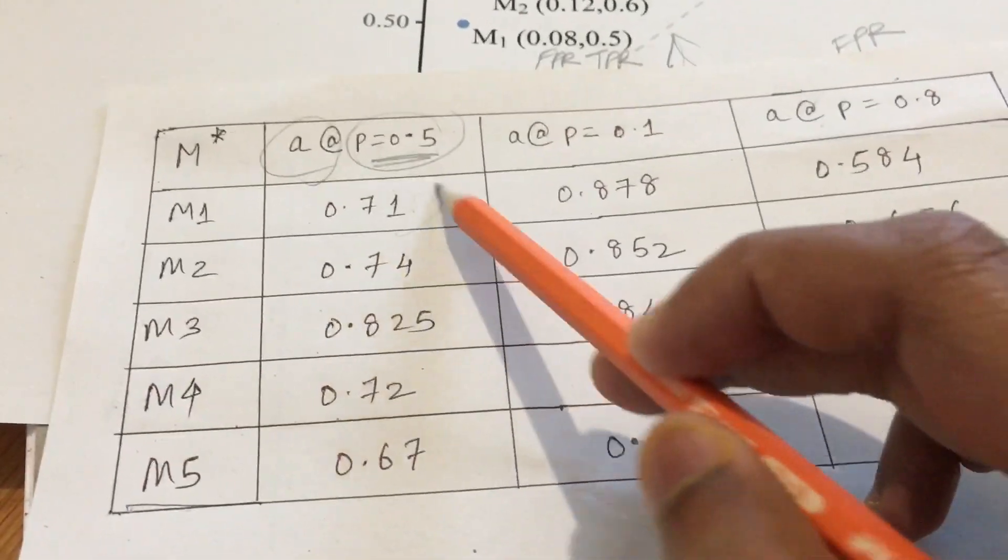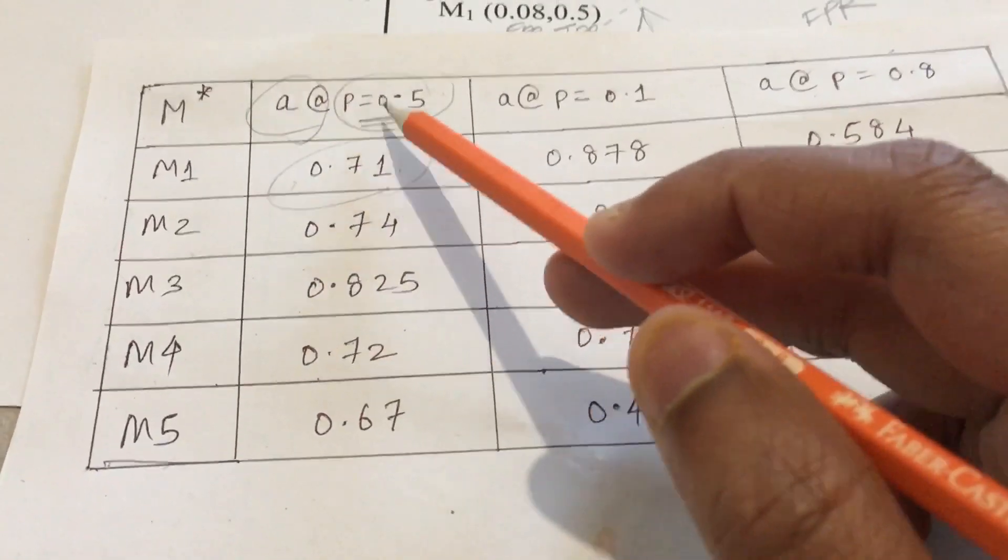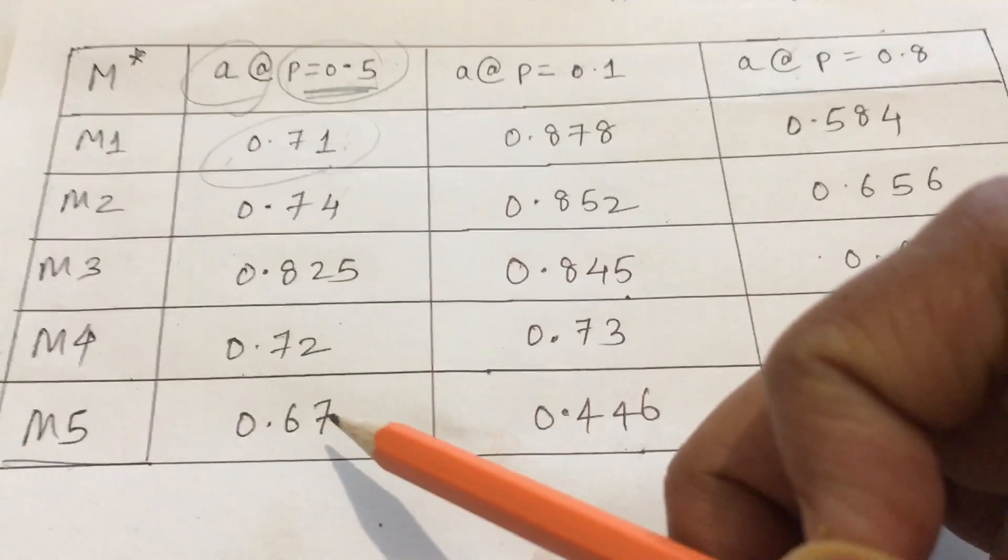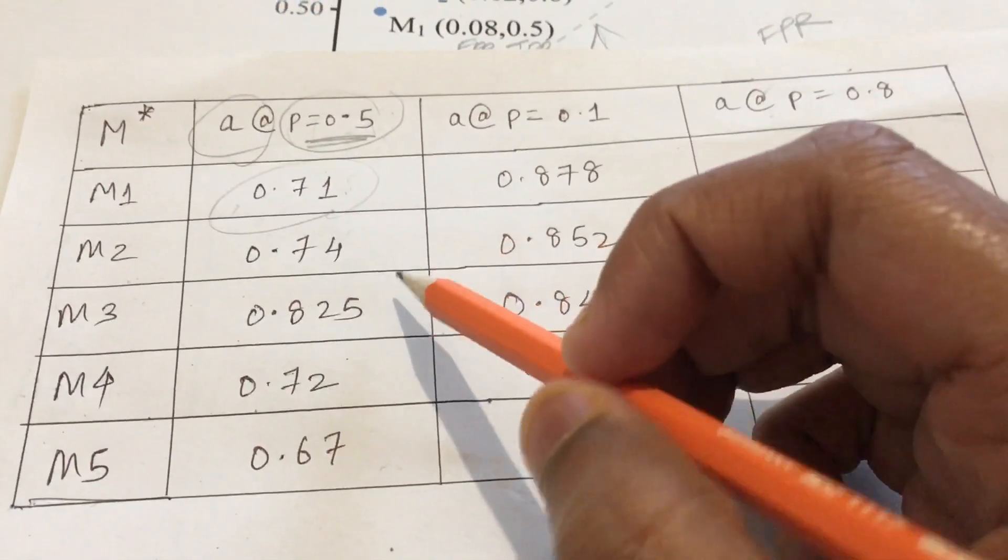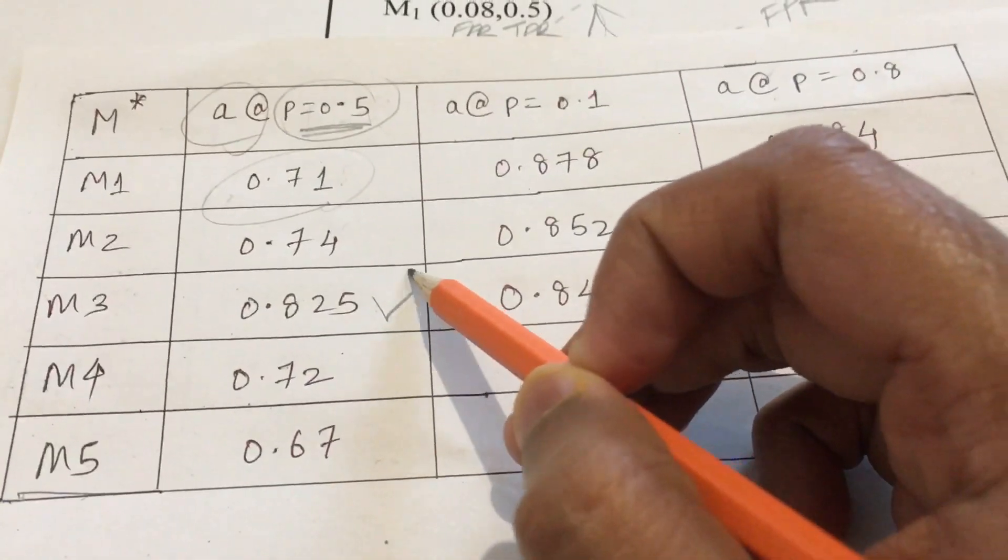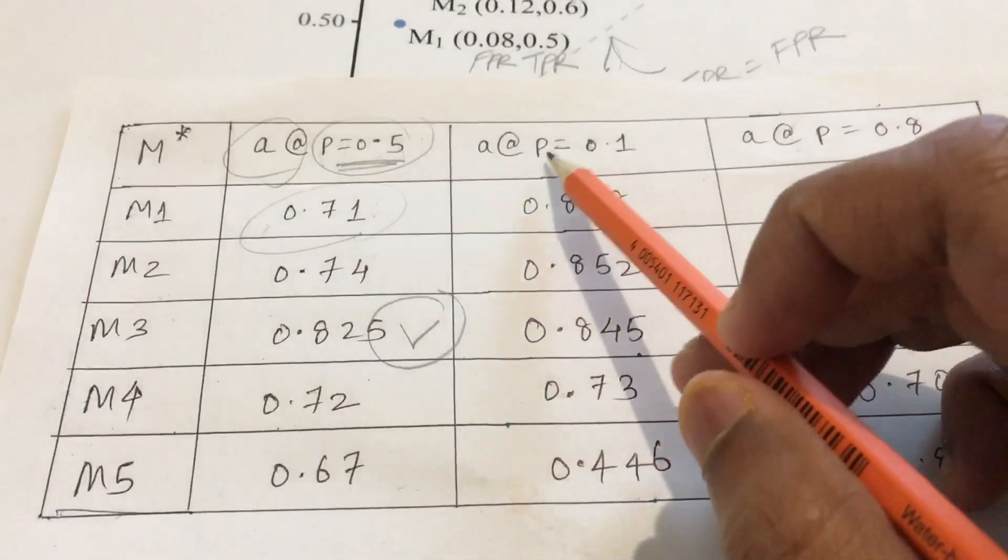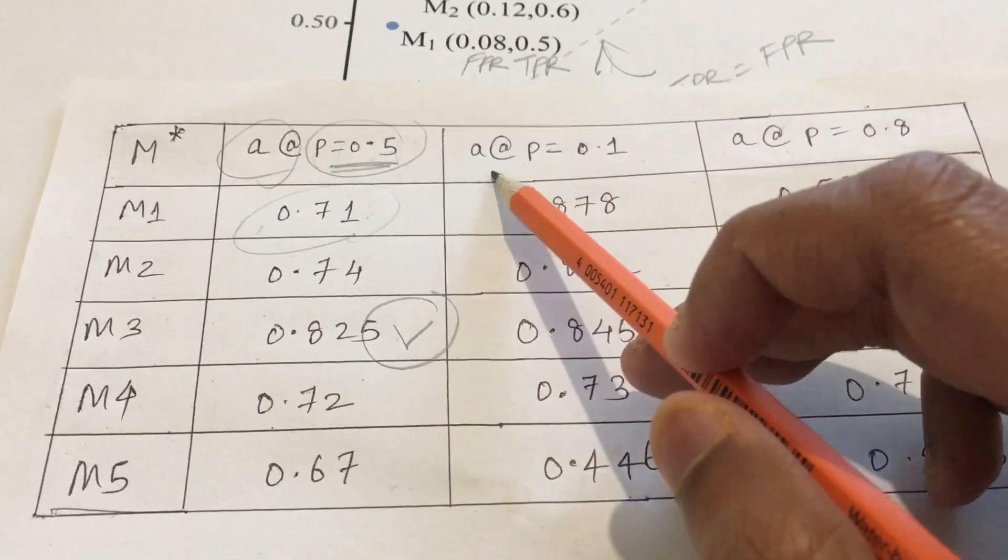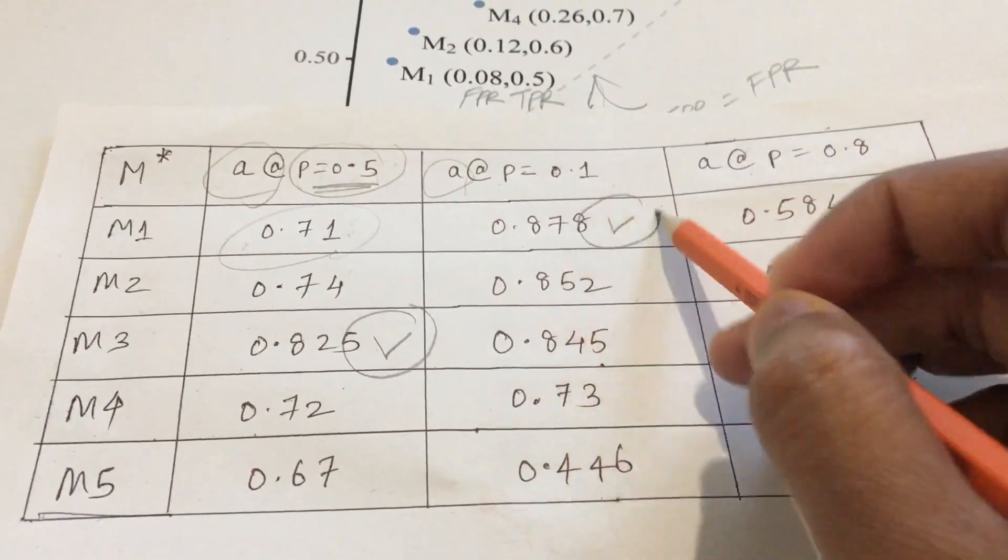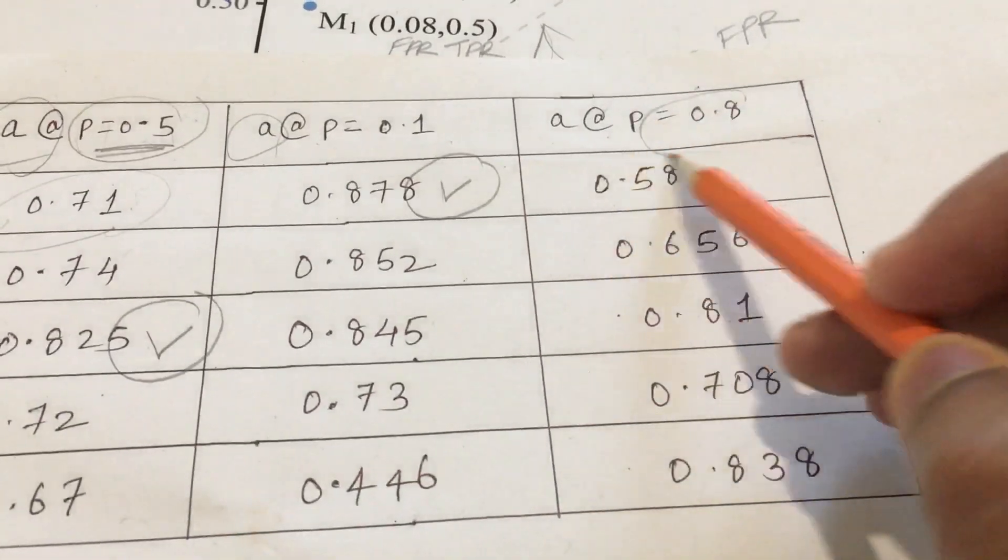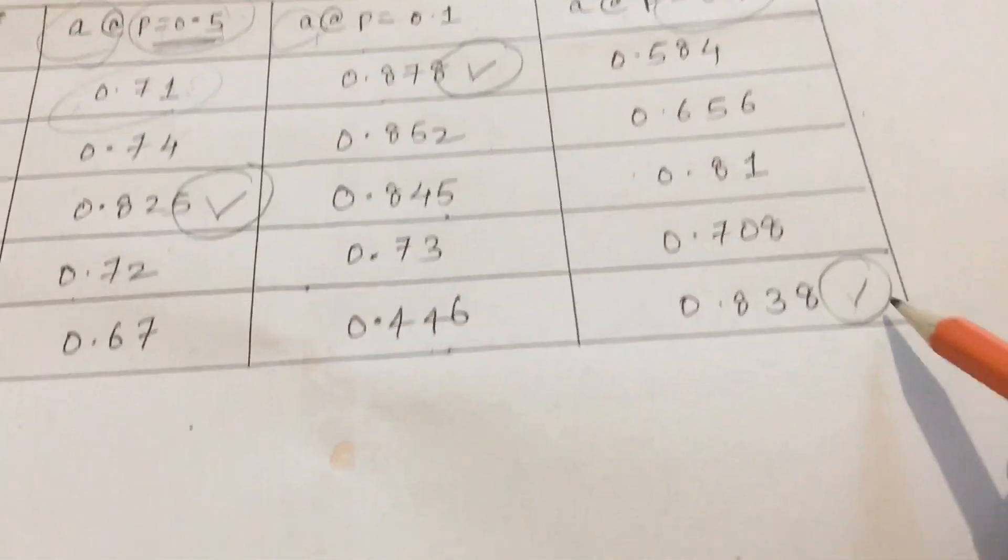For model M1 when I substitute P as 0.5 and put the coordinates of TPR and FPR for model 1, I get the accuracy as this much. Similarly for M2, M3, M4, M5 for probability 0.5 we get the accuracy values like this. Mathematically we can see which model has the highest accuracy - that is the third model since it has the highest accuracy. Similarly for probability 0.1 we calculate the accuracy values and this has the highest accuracy. For 0.8 we have the highest accuracy for model M5.